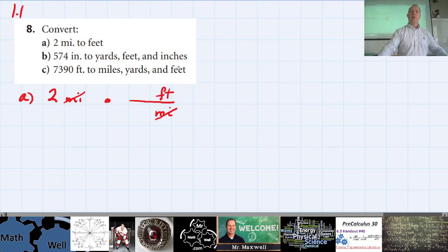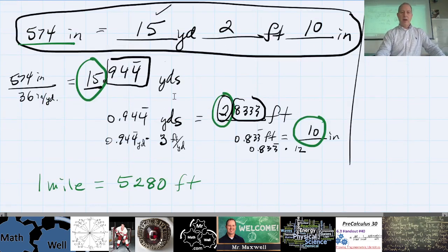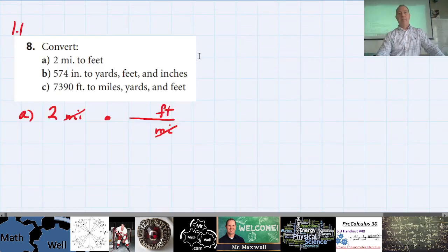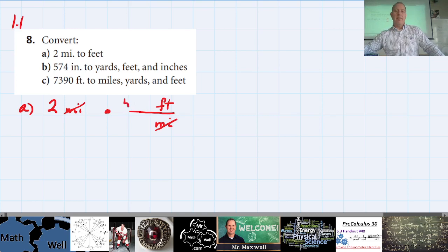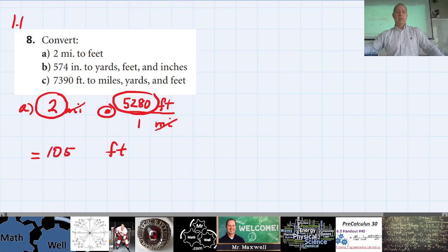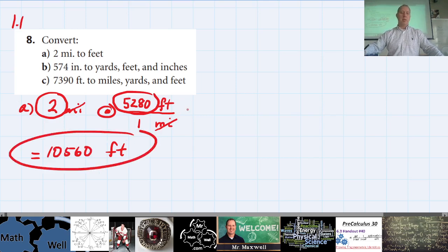There are 5,280 feet in one mile, so I'm going to put 5,280 on top and one mile on the bottom. That means I'll end up with a value in feet, which comes when I multiply 2 times 5,280, giving 10,560 feet.